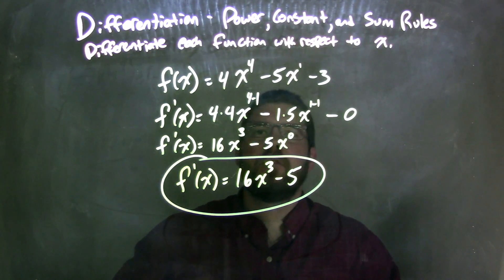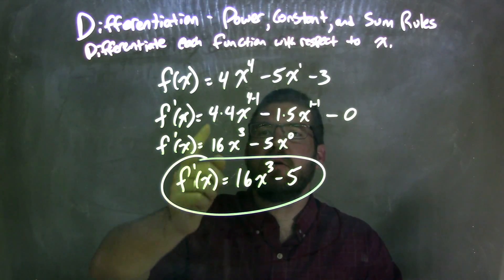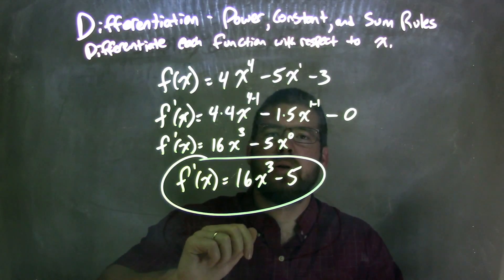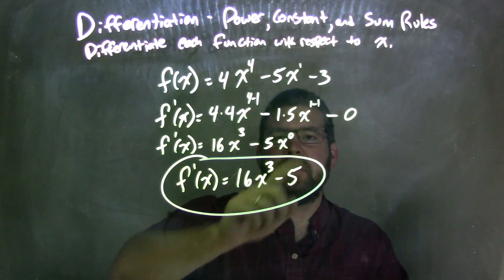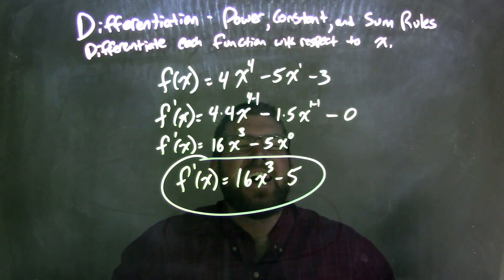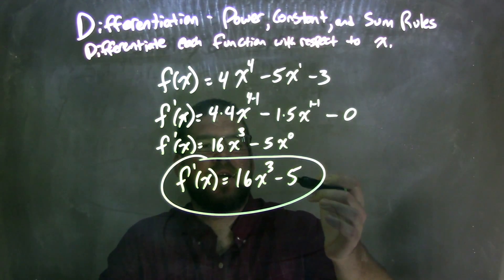And then we simplify, 4 minus 1 is 3, so we have the 3rd power, and 4 times 4 is 16, so we have 16x to the 3rd power here. And then 1 times 5 is 5, and 1 minus 1 is 0, so we have 5x to the 0 power. We know x to the 0 power is just 1, so when we wrote our final answer, we got here.